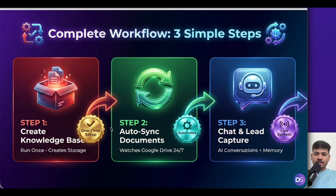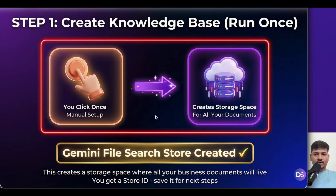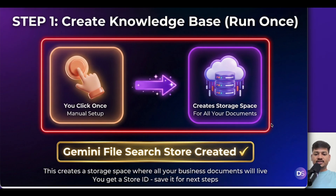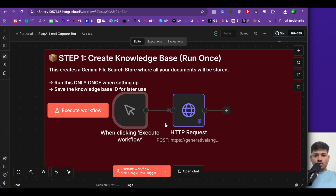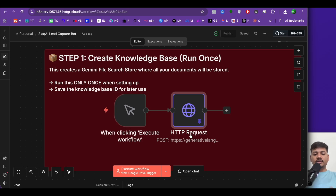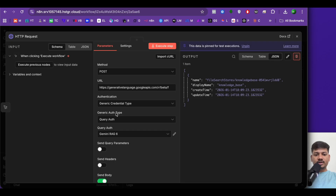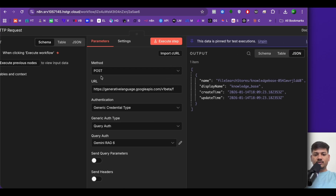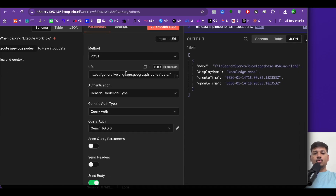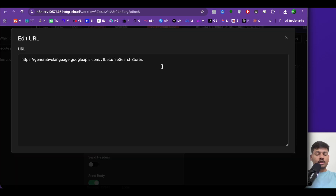Let's see in depth what happens in step one — creating a knowledge base. We'll execute this workflow using only two nodes. We just click once and instantly a Gemini file search tool is created, giving us a store ID. We have a manual trigger node and an HTTP request node. The method will be POST and we send the request to this URL.